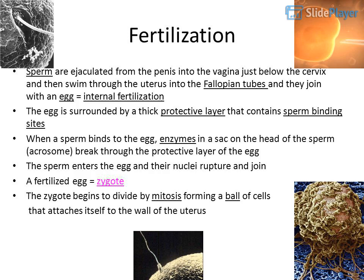During fertilization, sperm are ejaculated from the penis into the vagina just below the cervix, then swim through the uterus into the fallopian tubes to join with an egg — this equals internal fertilization. The egg is surrounded by a thick protective layer containing sperm binding sites. When a sperm binds, enzymes in the acrosome on the head of the sperm break through the protective layer. The sperm enters the egg and their nuclei rupture and join.